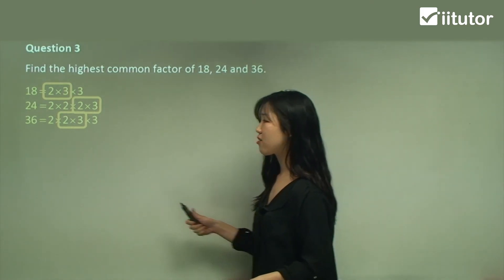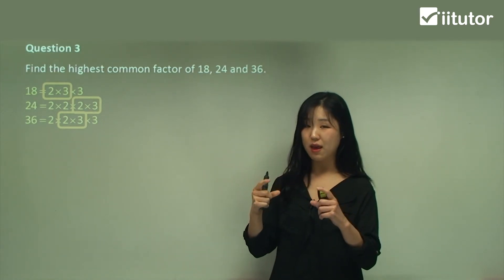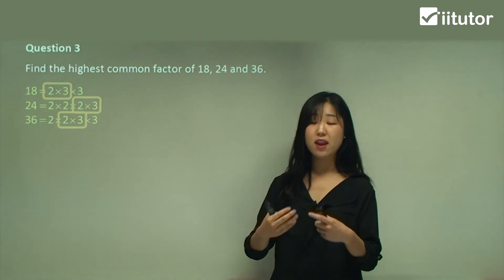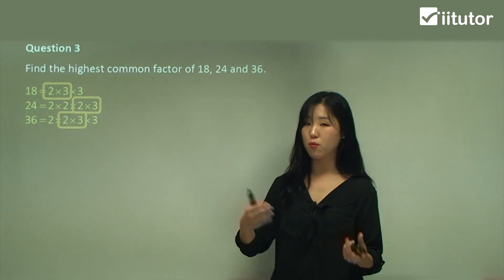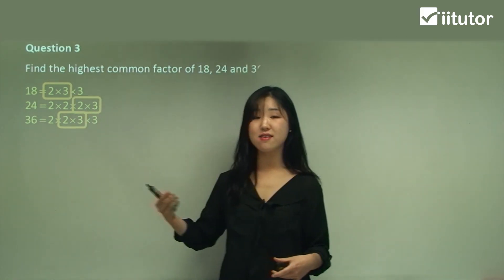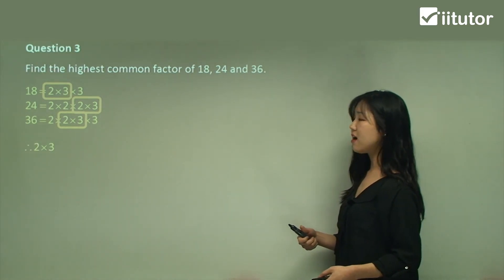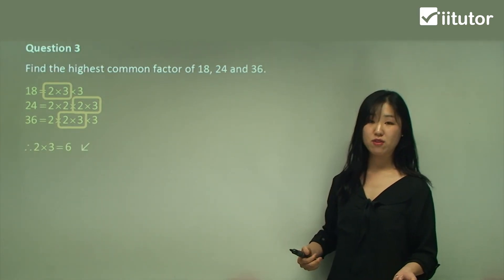We can't put extra 2s or 3s because we only have to find the same factors in the right amounts. We can't have more in one and less in the other. It must be exactly same and exactly same quantities as well. So 2 times 3 is the highest common factor. It's 6. Just make sure you simplify it at the end.